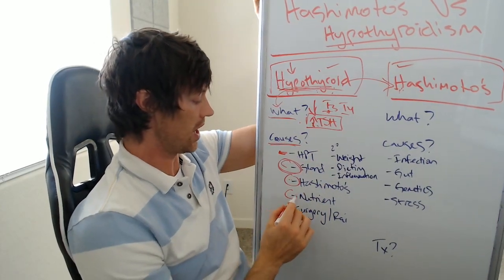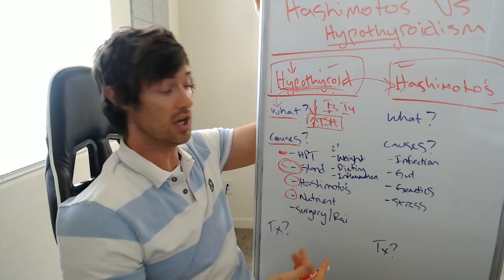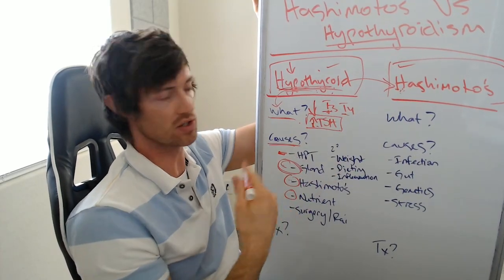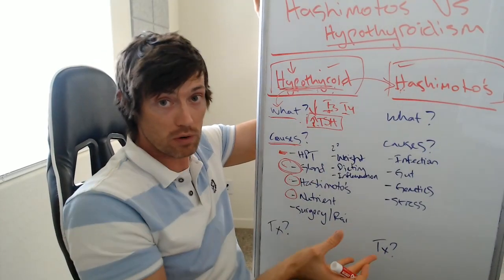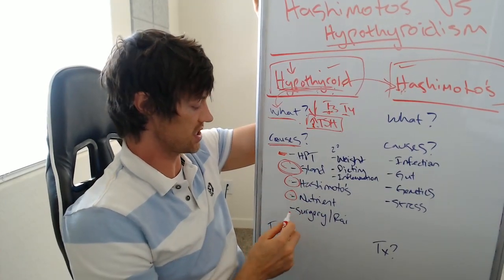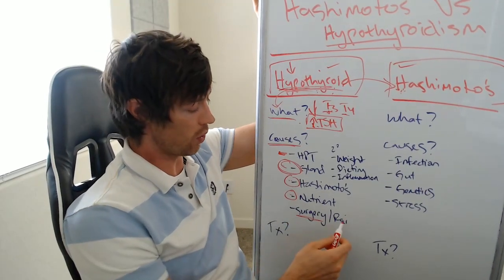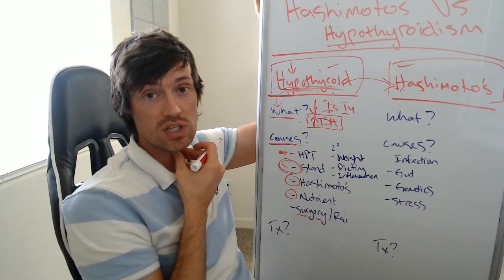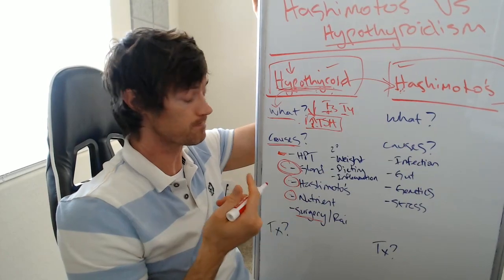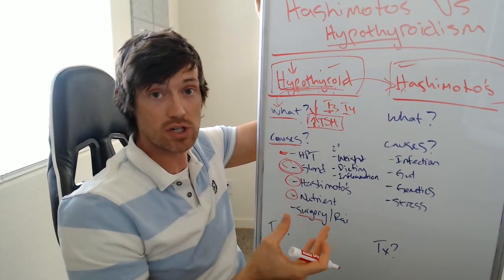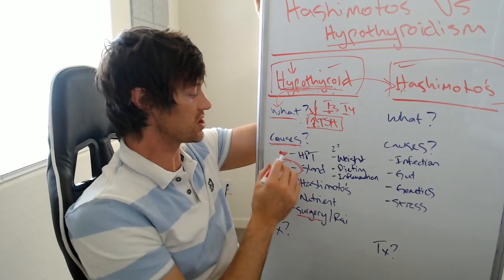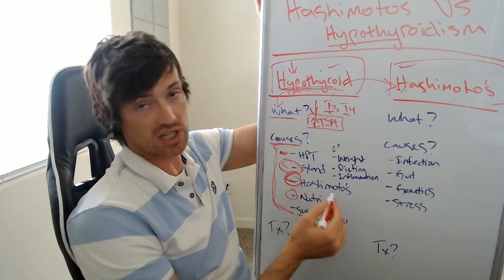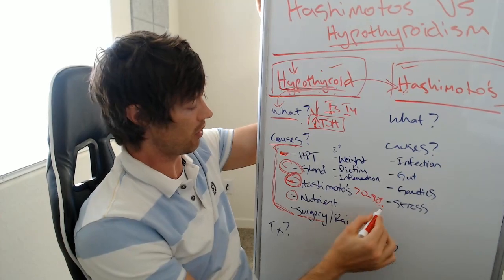Another cause of low thyroid could be nutrient deficiency. A big one is iodine — iodine is required to produce T4 and T3, and if you don't have enough, your thyroid hormone is going to be low. Then there's surgery or RAI. If you surgically remove your thyroid, you're going to be low thyroid. If you've ablated it using radioactive iodine — a treatment for thyroid cancer, hyperthyroidism, or Graves' disease — and it no longer works, you're going to be low thyroid. Hashimoto's represents maybe 70 to 90% of cases, but there are other causes as well.